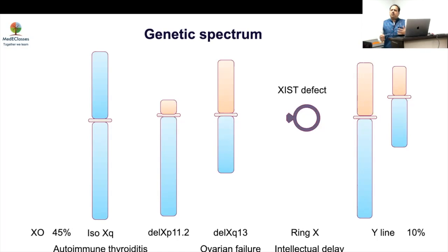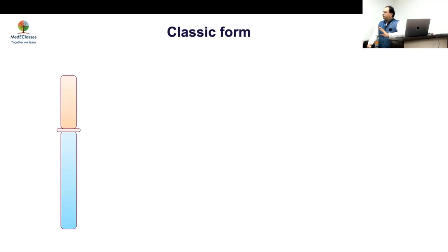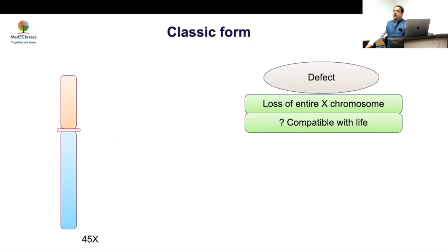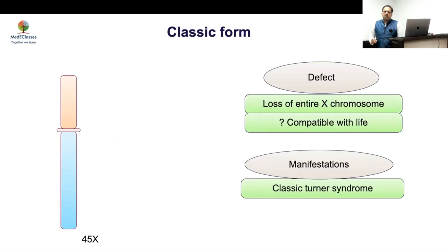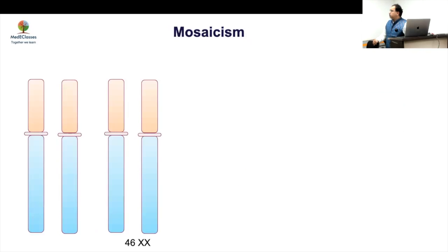From a clinical perspective, approximately 45% of all Turner cases are X0 — the classical form, which has the most severe manifestations. The classic form presents with height approximately 20 centimeters below normal, absence of pubertal development, and significant growth failure in all aspects.